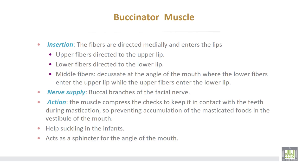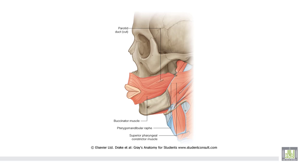The fibers are directed medially and enter the lips: upper fibers go to the upper lip, lower fibers go to the lower lip. The middle fibers decussate at the angle of the mouth where the lower fibers enter the upper lip and the upper fibers enter the lower lip. Nerve supply is from the buccal branch of the facial nerve. The muscle compresses the cheeks to keep them in contact with the teeth during mastication, preventing accumulation of food in the vestibule of the mouth, and it helps in suckling in infants and acts as a sphincter for the angle of the mouth.